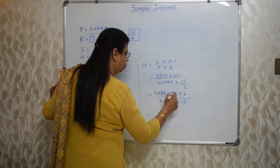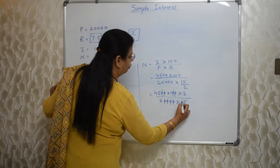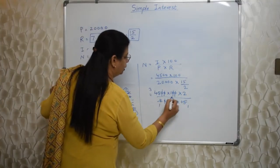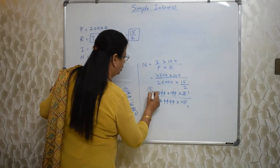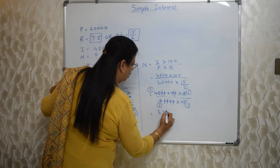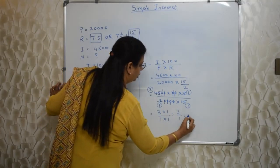Now 1, 2, 3, 4. Four zeros I am cancelling from top and bottom. Then 15 ones are 15, 15 threes are 45. 2 ones are 2, 2 ones are 2. Now what is remaining? 3, 1, 1, 1. So I am rewriting it here. So that is 3 upon 1 means 3 years.